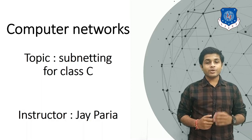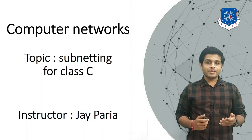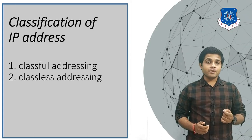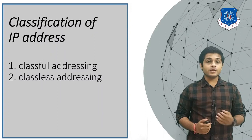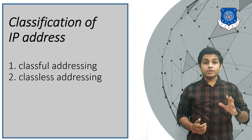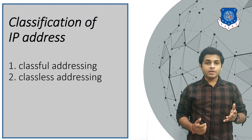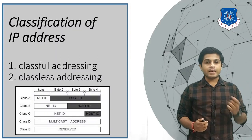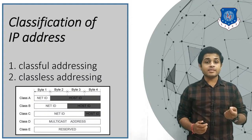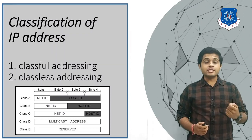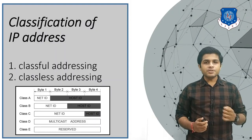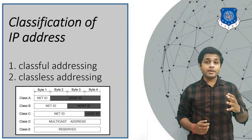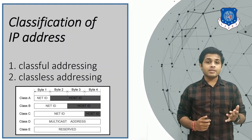Hi everyone, this is Joy, your instructor for computer networks. The topic we are going to see is subnetting for Class C. If you remember, the IPv4 address length was 32 bits, so 2 raised to 32 means 4 billion IPv4 addresses exist. To distribute these addresses efficiently, they are divided into classes: A, B, C, D, and E. Classes A, B, and C are unicast IP addresses, meaning those addresses are for one device only. Class D is multicast — one IP address may be for more than one device — and Class E is reserved for development purposes.